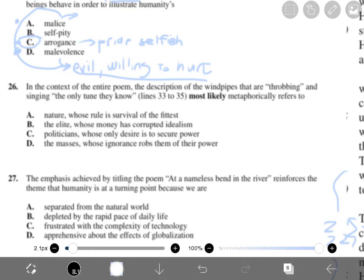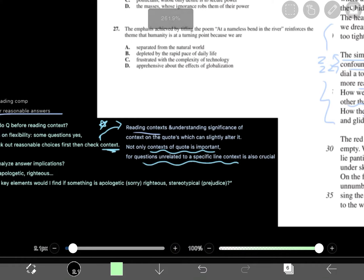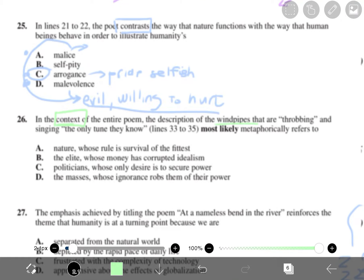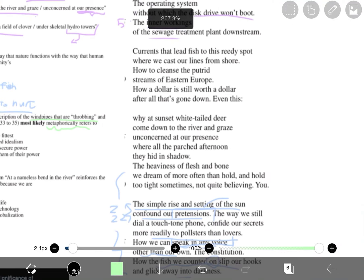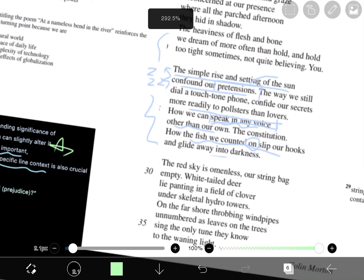In the context of the entire poem, whenever it says the context, you have to read the context. If the question says context, then your answer is going to involve a lot about context. So you need to read the context to understand the tone of the answers. The description of the windpipes that are throbbing and singing the only tune they know most likely metaphorically refers to. This one I've done. It's awful. But let's see. Context of the entire poem. This is the part where you need to start reading the entire poem. I've already read it before I started this video. Many times actually.